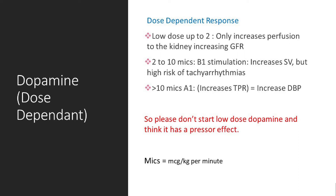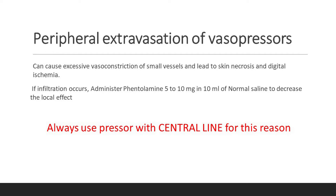Dopamine was thought to be safer to give via a peripheral line, since most pressors ideally require central access — giving them in small peripheral vessels causes profound vasoconstriction leading to digital ischemia and potential limb loss. However, studies have shown that with a larger-gauge peripheral IV, you can use other pressors as well. There's no reason to pick dopamine over the others based solely on peripheral access. If starting dopamine for active shock, go higher than 10 micrograms to get alpha-1 squeeze and raise blood pressure.